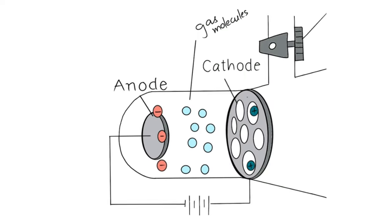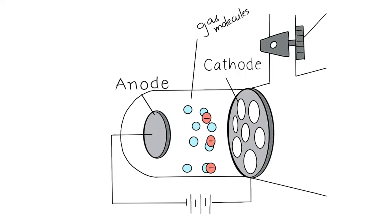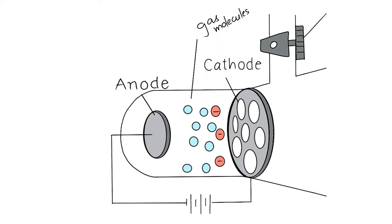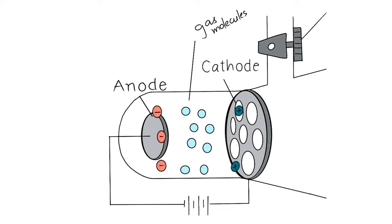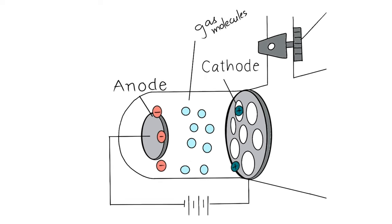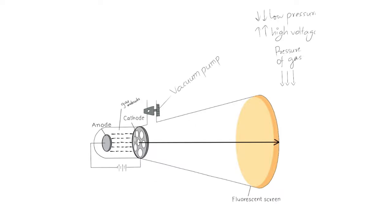When high voltage is applied, electrons shoot out of the gaseous atoms. As the electrons are no longer present in the atoms, these atoms turn into positively charged ions, which are then accelerated towards the cathode due to the opposite charge. These positive ions pass through the holes in the cathode and hit the tube behind the cathode. A glow can be observed on the coating. As the positively charged particles pass through the holes in the cathode, they are called canal rays.